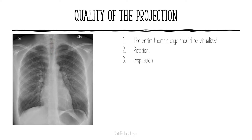Then we have to assess the inspiration. To assess the inspiration, we can use two methods. The first is to count the ribs — we should be able to see at least nine ribs for the lungs to be inspired sufficiently. Alternatively, you can look at the posterior parts of the ribs and the mid-clavicular line: if the fifth, sixth or seventh ribs penetrate the diaphragm at the mid-clavicular line, we can say that the inspiration is sufficient. If the lung is not sufficiently inspired, we can see less of the lung and may miss important changes.